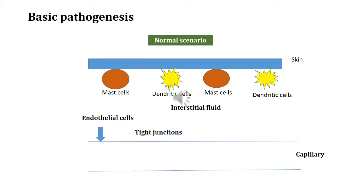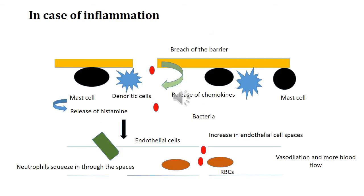This is a normal scenario. Now let us understand what happens when the defense is intruded by a foreign body. Consider this case: there is a breach of the barrier, that is the skin, and bacteria has entered into the interstitial fluid. As soon as the skin layer is breached, the cells in this layer release chemokines. These chemokines activate mast cells, and the mast cells in turn release histamine. This histamine acts on the endothelial cells of the capillaries and causes them to separate out or expand.